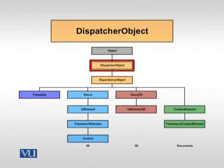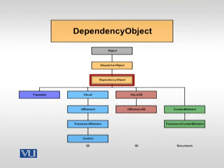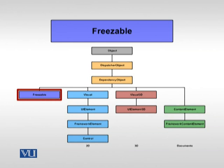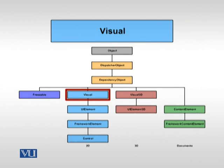Freezable ایک ایسا object ہے جس کی state کو freeze کر سکتے ہیں۔ اس میں freeze کا function ہے جس کے بعد وہ thread safe ہو جاتا ہے اور اسے different threads میں share کر سکتے ہیں۔ پھر Visual کی پوری hierarchy ہے - 2D representation اور Visual 3D کی 3D classes ہیں جو actual classes ہیں جو screen پر render ہوتی ہیں۔ Content کی hierarchy ہماری non-visual elements کی hierarchy ہے جو screen پر display نہیں ہوتے، لیکن ان میں data binding اور WPF کے other features supported ہیں۔